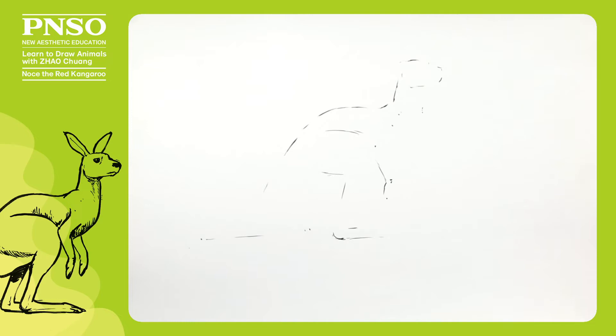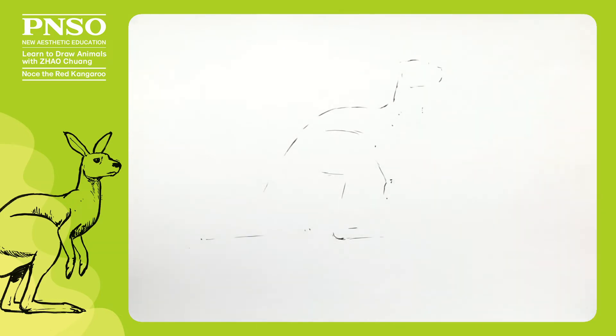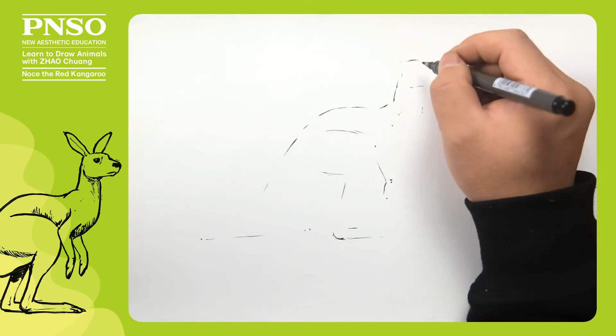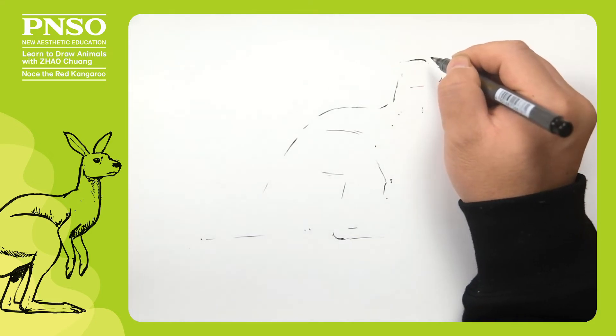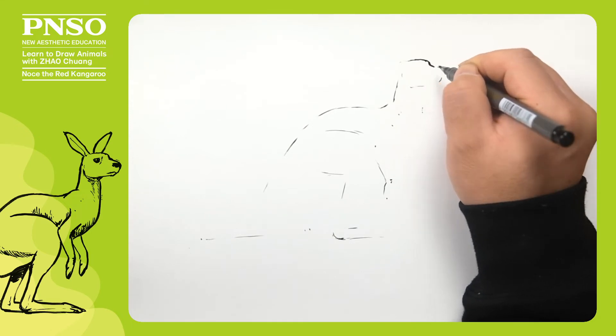After we determine general shapes, let's draw the details of each part. First, let's draw its head. Its head generally looks like a mixture of the rabbit's and the rat's heads.